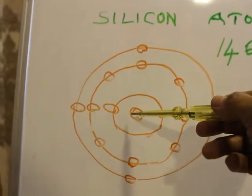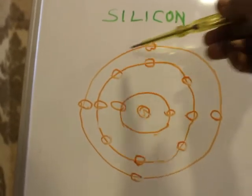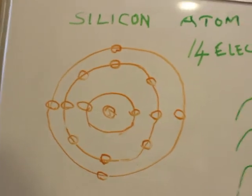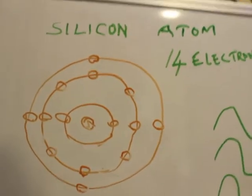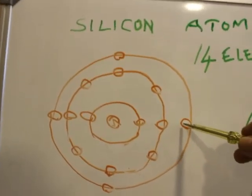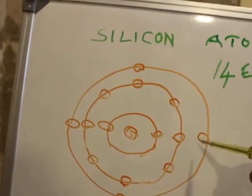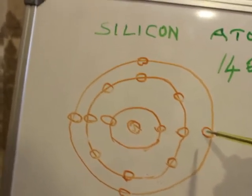In the nucleus you can see the protons and neutrons. These electrons are electrically negative charge. The atom consists of a nucleus with electrons rotating around it surroundingly.